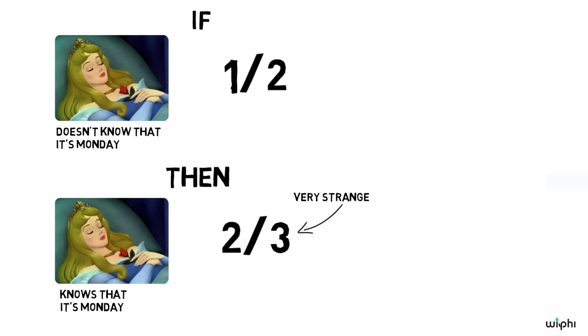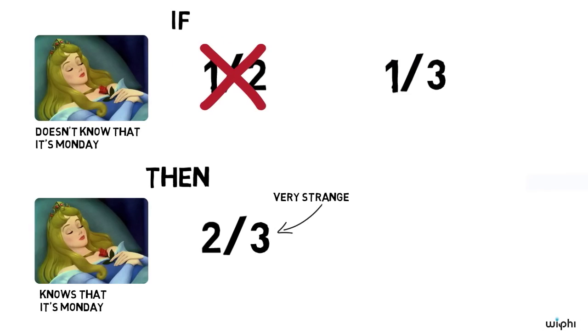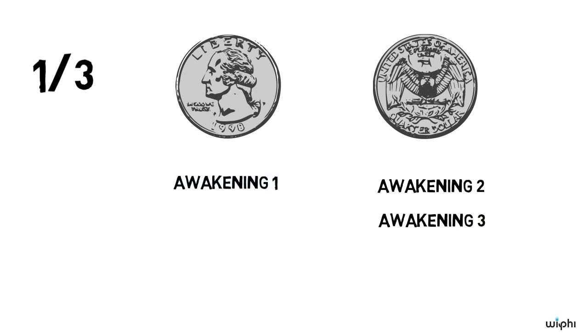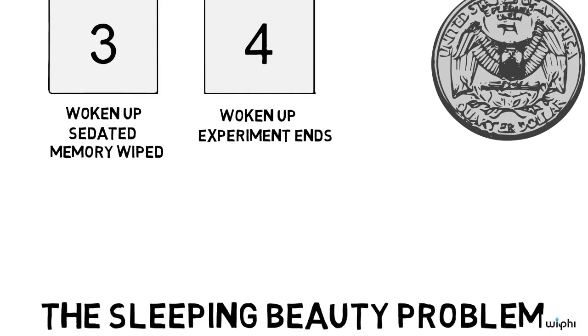Well, there are problems with that answer too. Remember that we thought the answer should be one third because there are three total potential awakenings and only one of them happens when the coin lands heads. Let's change the experiment a little bit but apply the same logic.